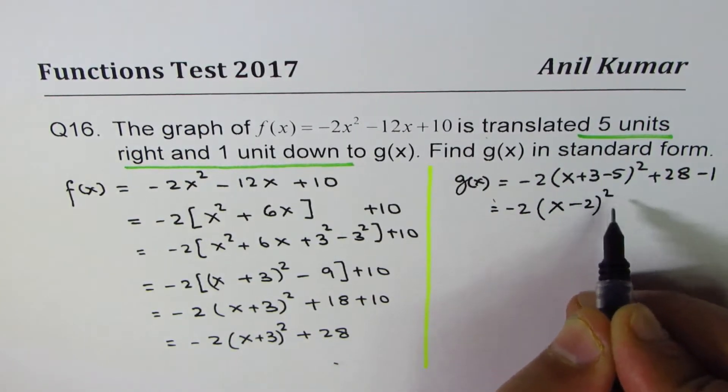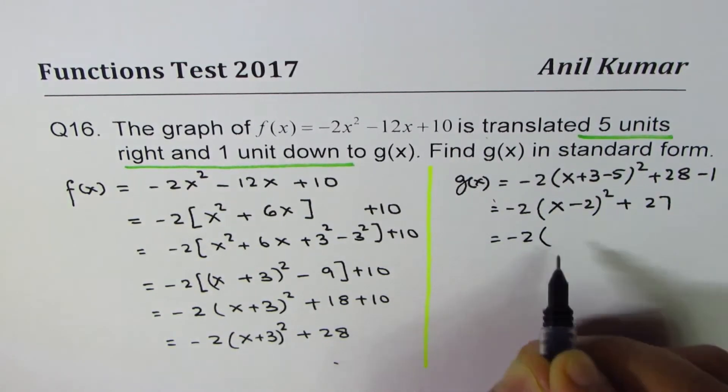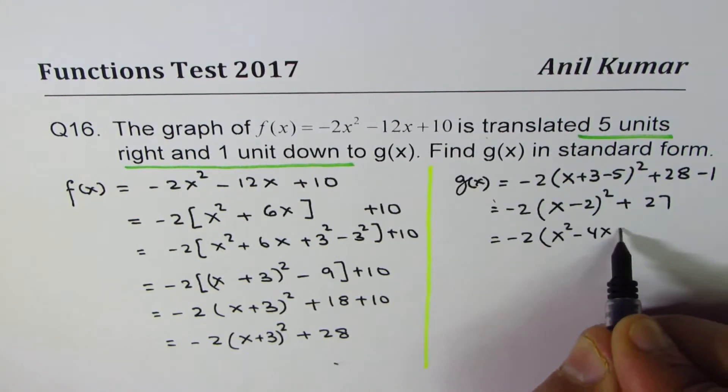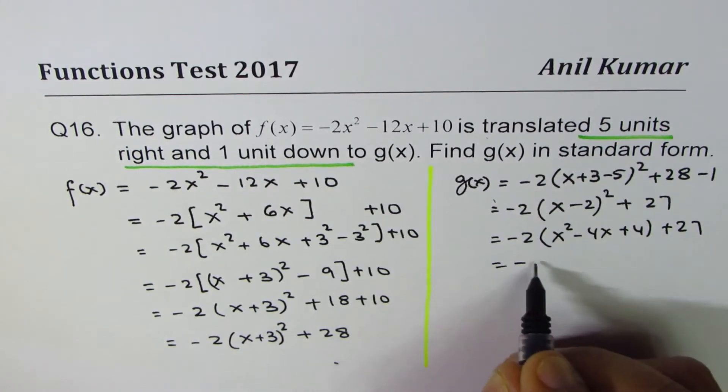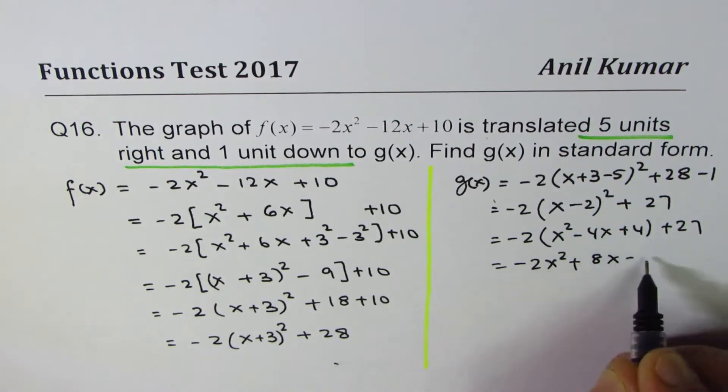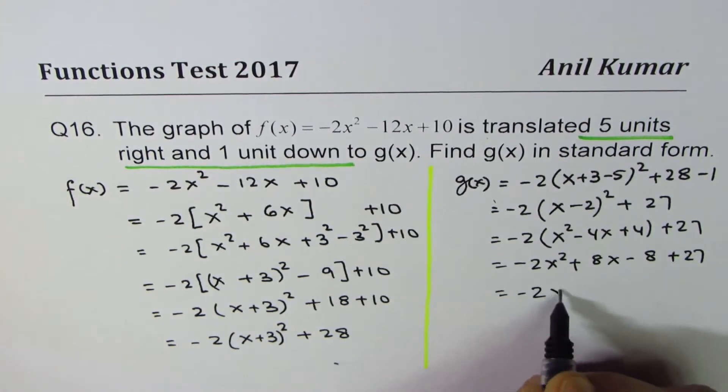That's -2(x² - 4x + 4) + 27, which equals -2x² + 8x - 8 + 27.